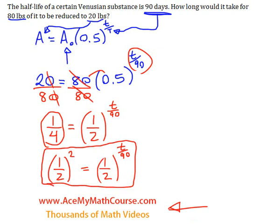Because we can actually just say at this point that 2 is equal to t over 90. Look at that. Because after all, I have the same base on both sides of the equation. So I can just do that. 2 equals t over 90.